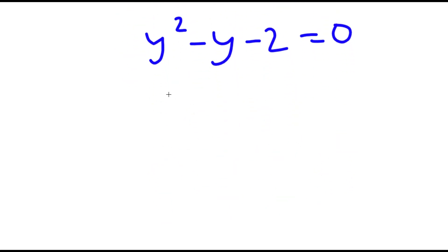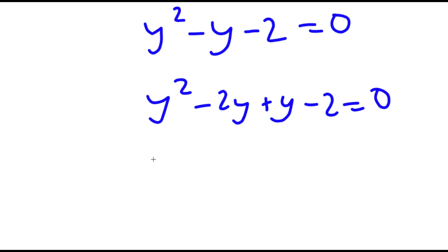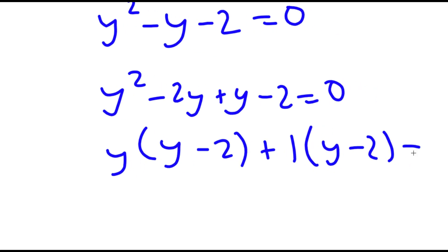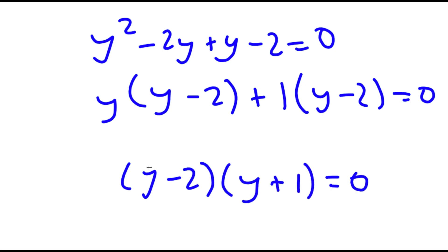I'm going to factor this by rewriting it as y squared minus 2y plus y minus 2 is equal to 0. Now I'm going to factor by grouping, so I have y times y minus 2 plus 1 times y minus 2 is equal to 0. So if I factor out y minus 2, I get y minus 2 times y plus 1 is equal to 0.